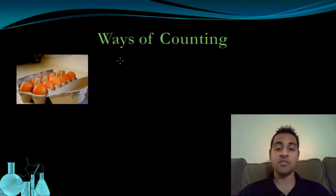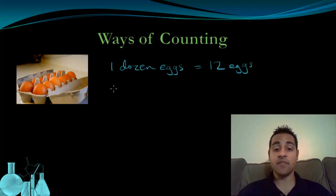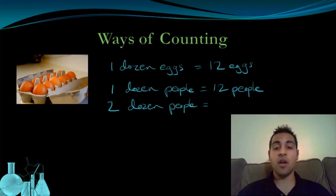The term dozen is used as a way of counting. We have a carton of eggs shown here. One carton of eggs has a dozen eggs in it. And we know that a dozen eggs means that we have twelve eggs. Likewise, if I said that we had one dozen people, we would know that that means twelve people. If I then said we have two dozen people, you would automatically know that that means twenty-four people. So we're using dozen as a way of counting.